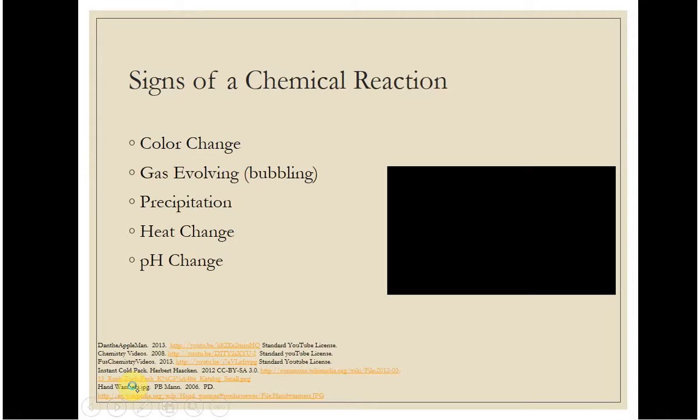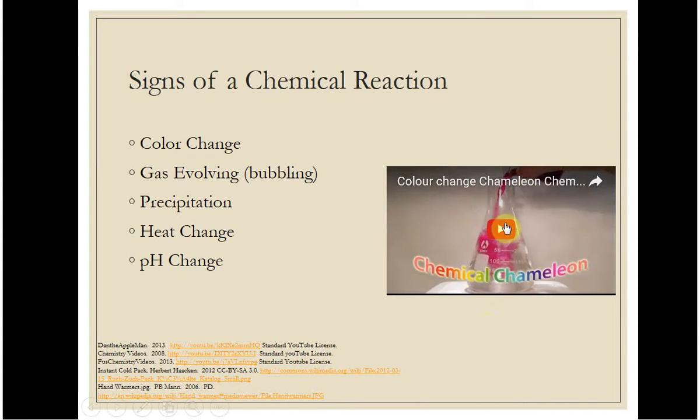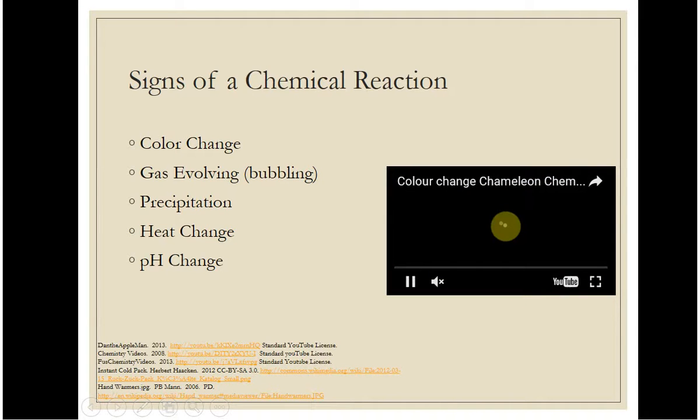Technically there are five signs of a chemical reaction. You can have a color change and I don't mean when you add a yellow solution and a blue solution and it turns green. That's just the way the world works. You have a yellow crayon and you draw on top of it with a blue crayon, it turns green. So what I'm talking about is a spontaneous color change that cannot be explained any other way.